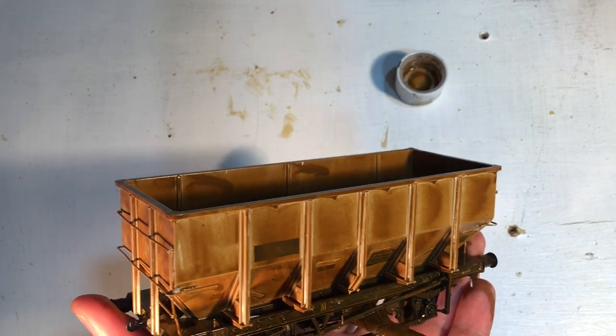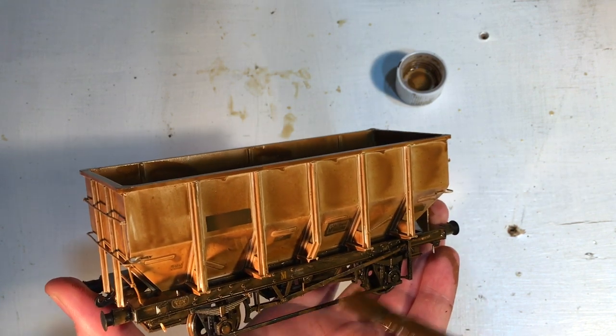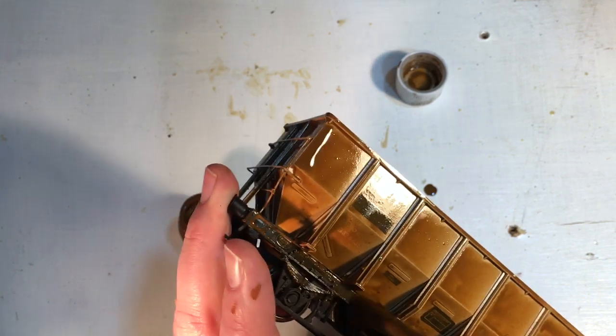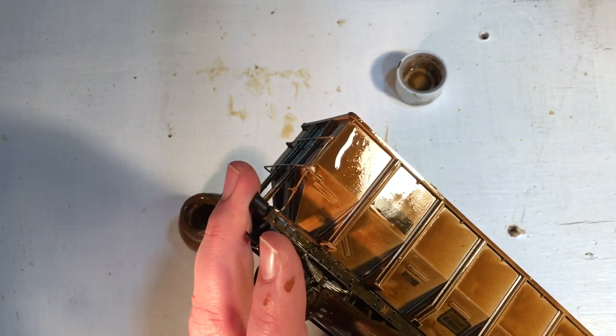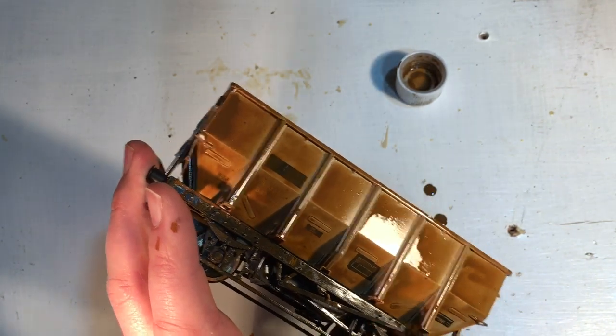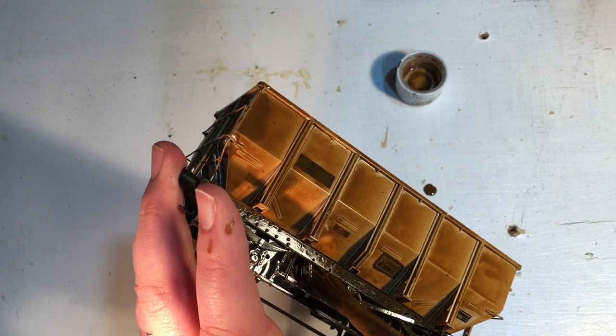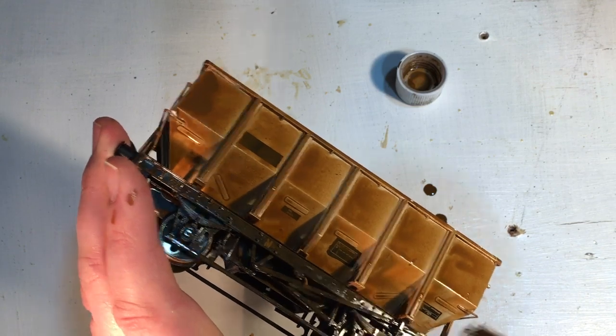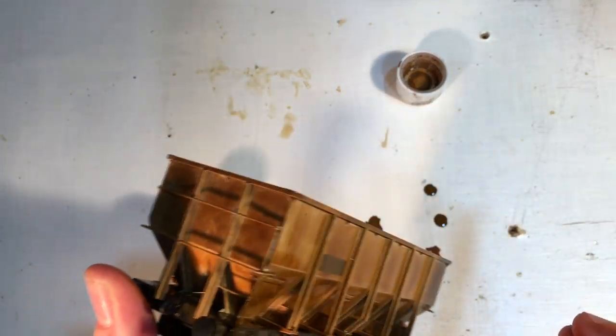Easy to miss some of these gussets, just got to get right in there. And then the underframe as well will get a patina of rust. Try and get right in there to the sides of the hoppers, sole bars, stretcher bars, sides of the hoppers.